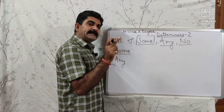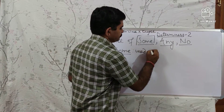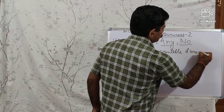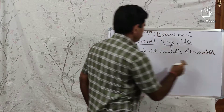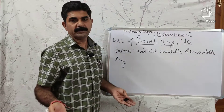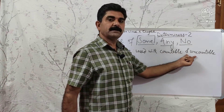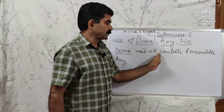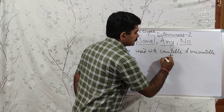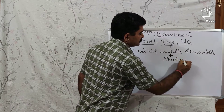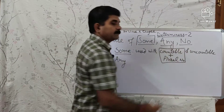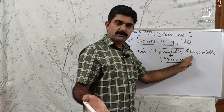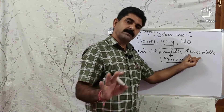SOME is used with both countable and uncountable nouns. When using SOME with countable nouns, it must be countable plus plural number, not singular. We cannot say 'some boy' or 'some book' — it must be 'some books' or 'some boys.' For uncountable nouns, there is no plural, so 'some water' is always singular.